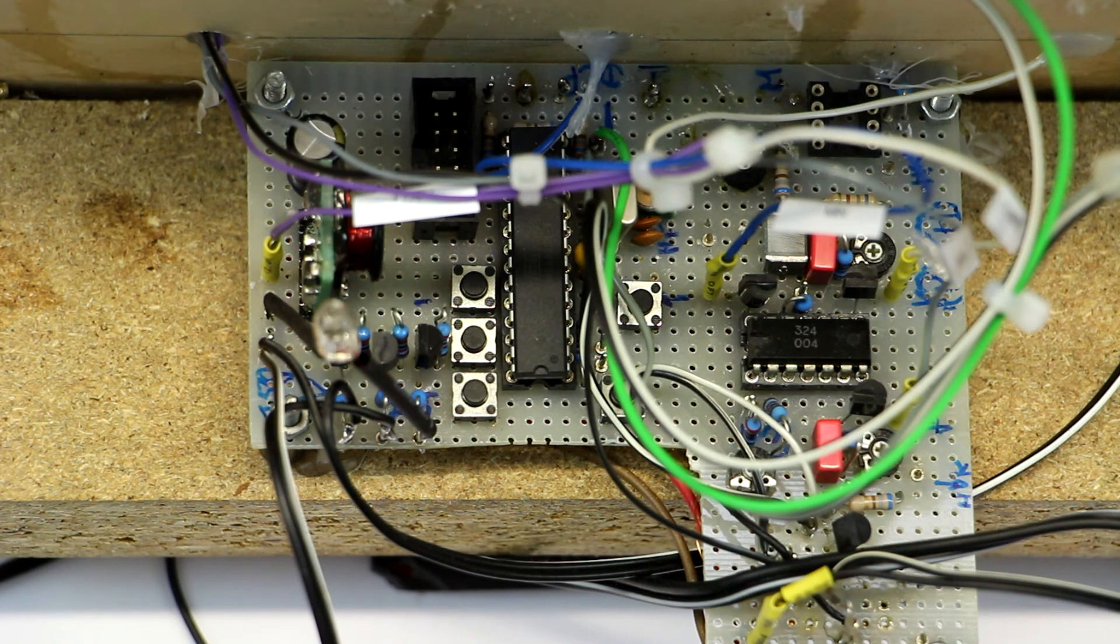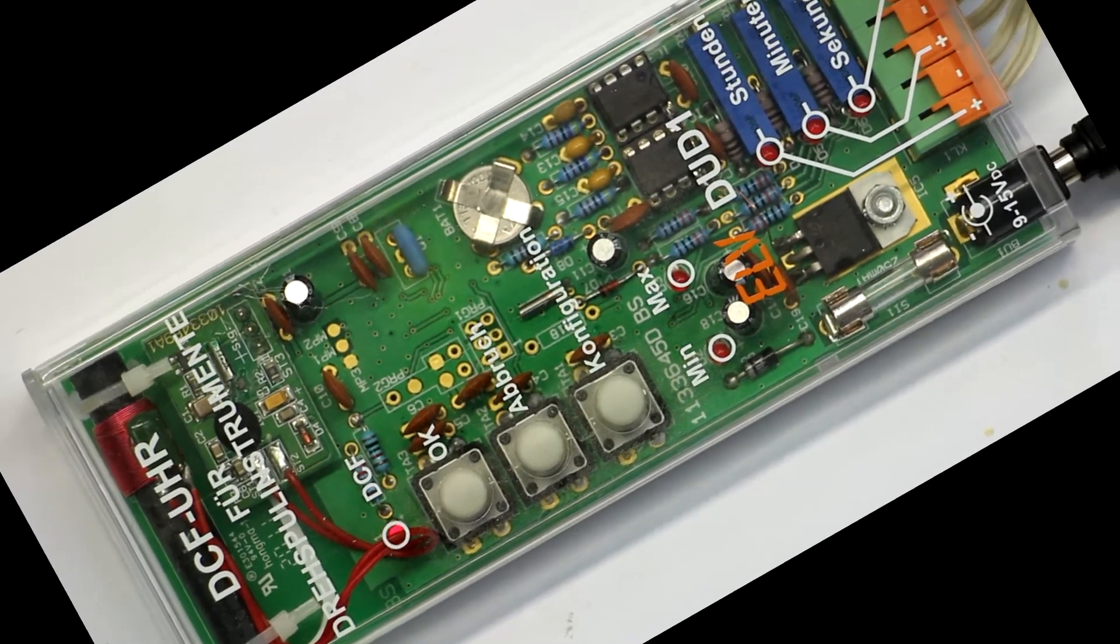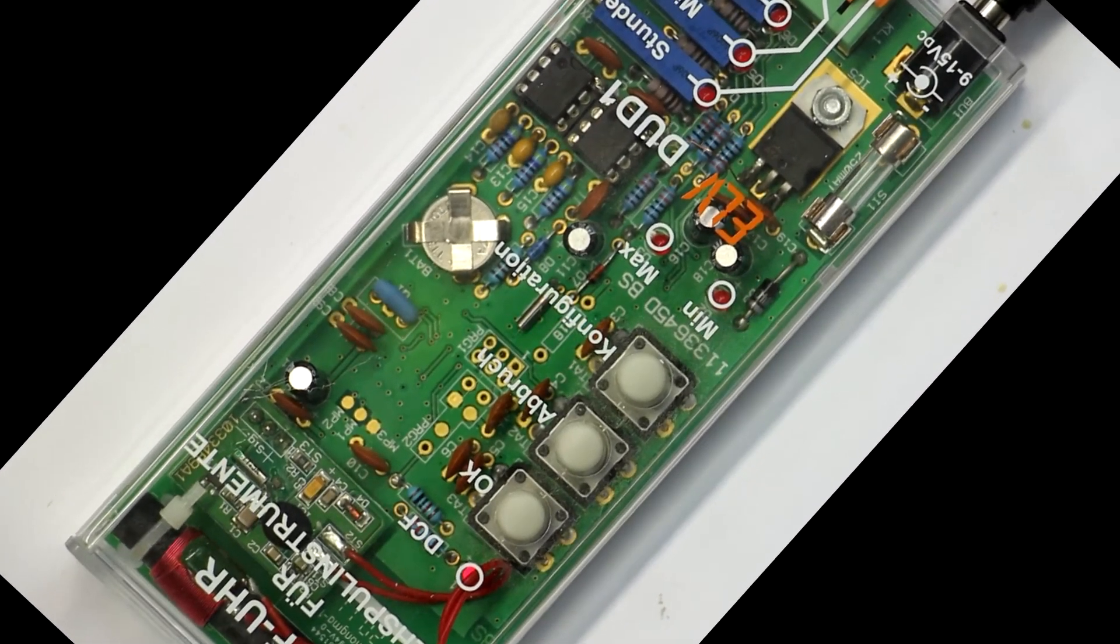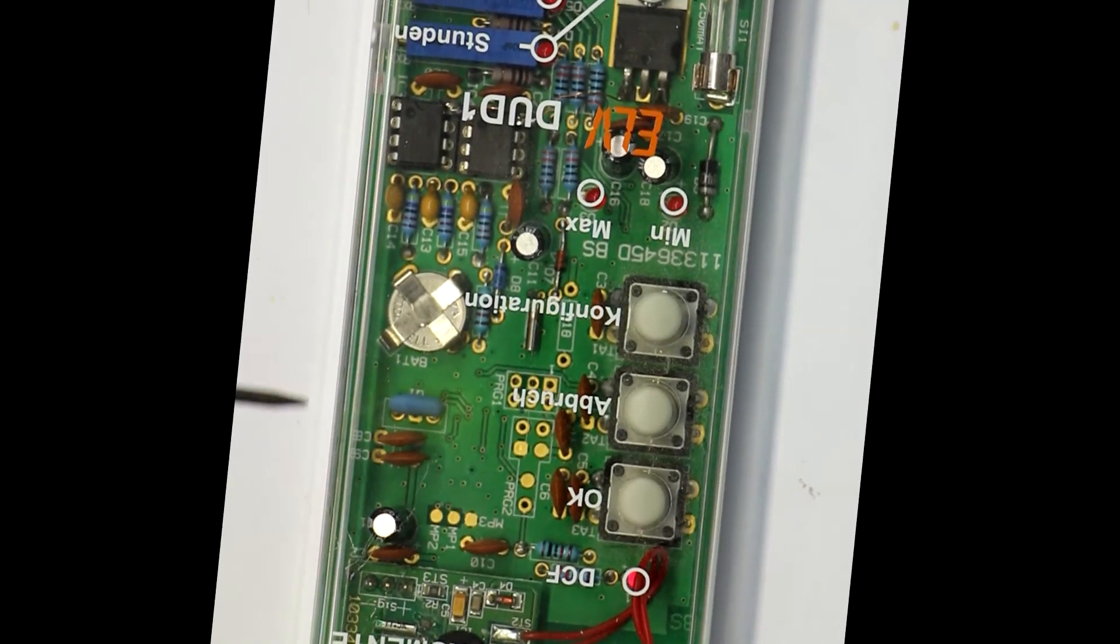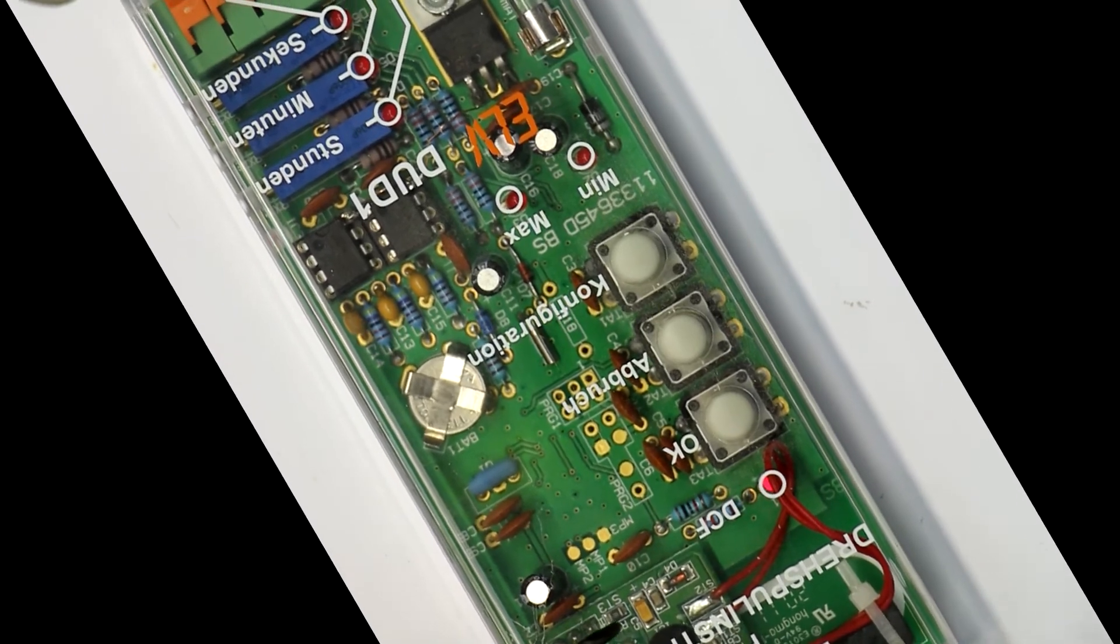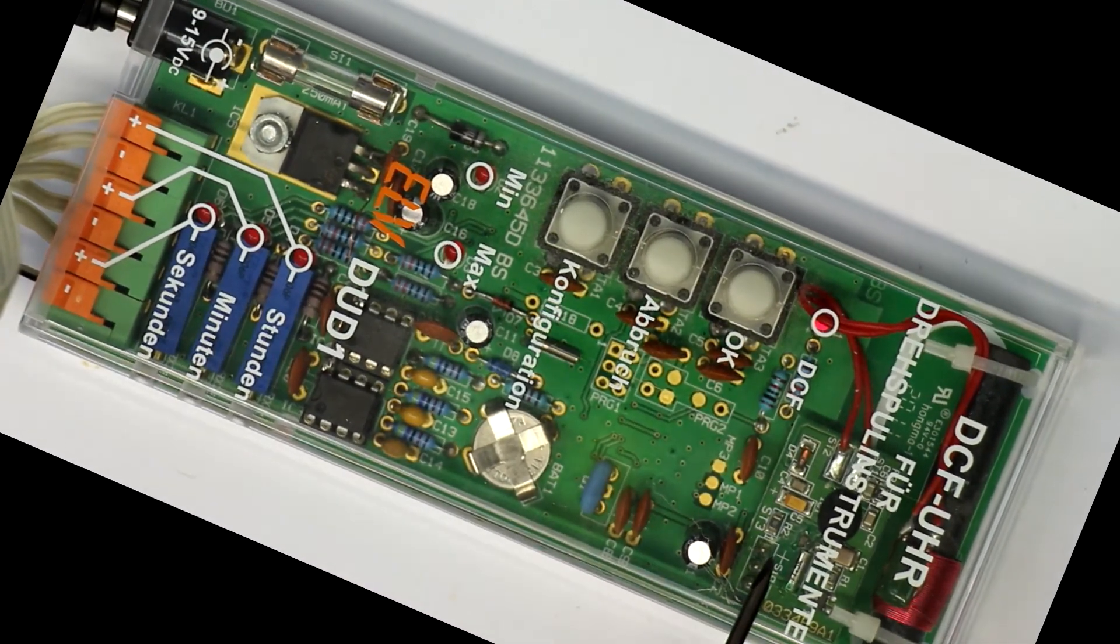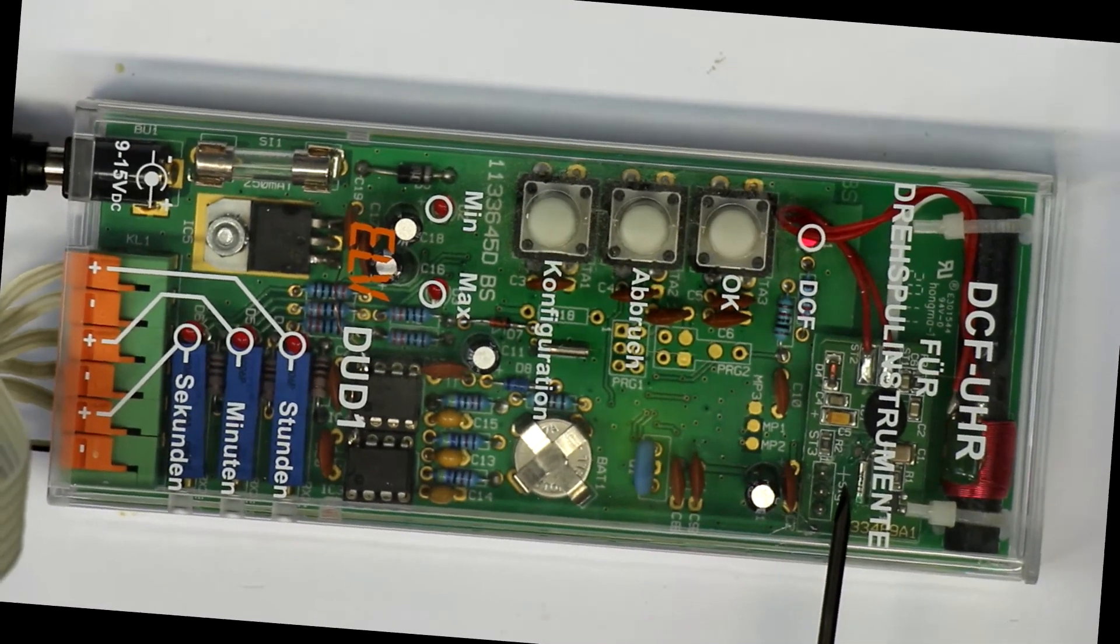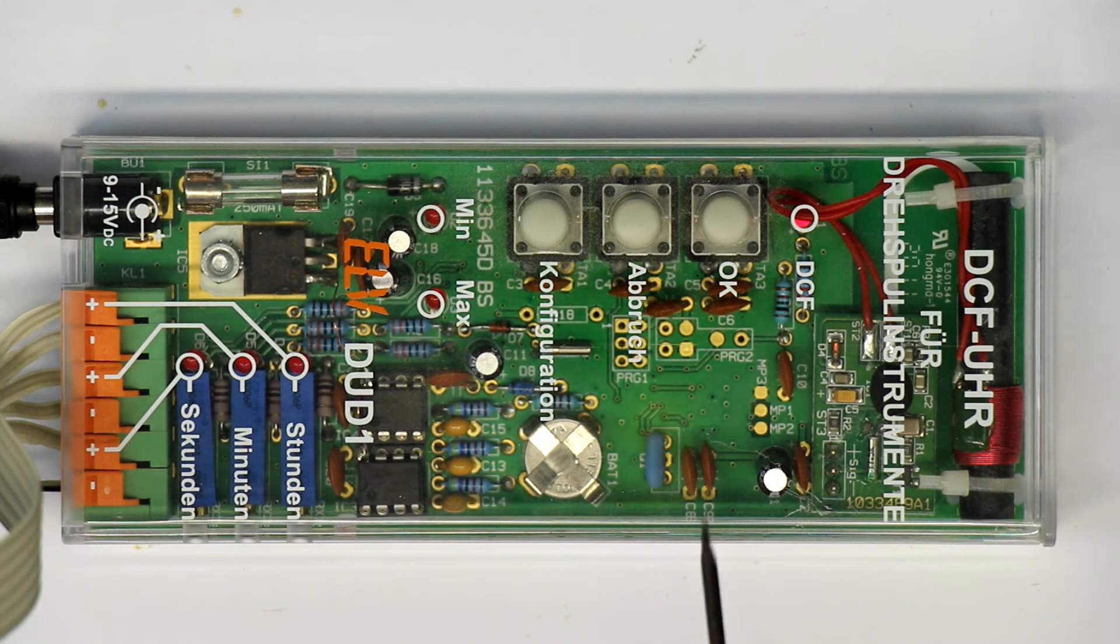So this is the readily built kit from ELV. As you can see inside, there's not very much. We have our timecode receiver. It's nice that it's integrated here into the clock. The microcontroller is, I think, on the lower side of the PCB, so not visible at the moment.